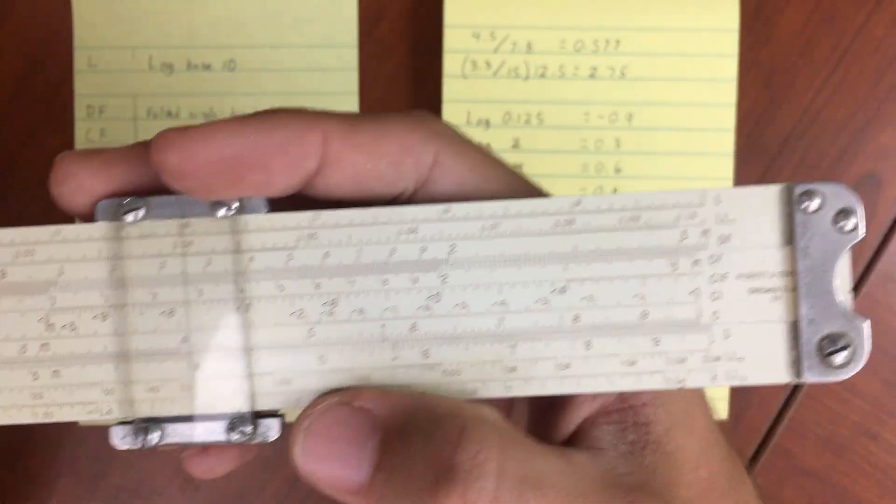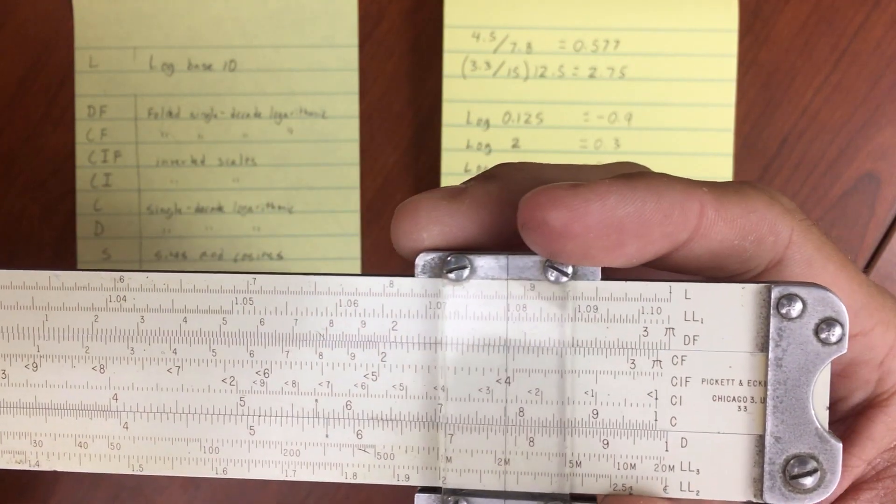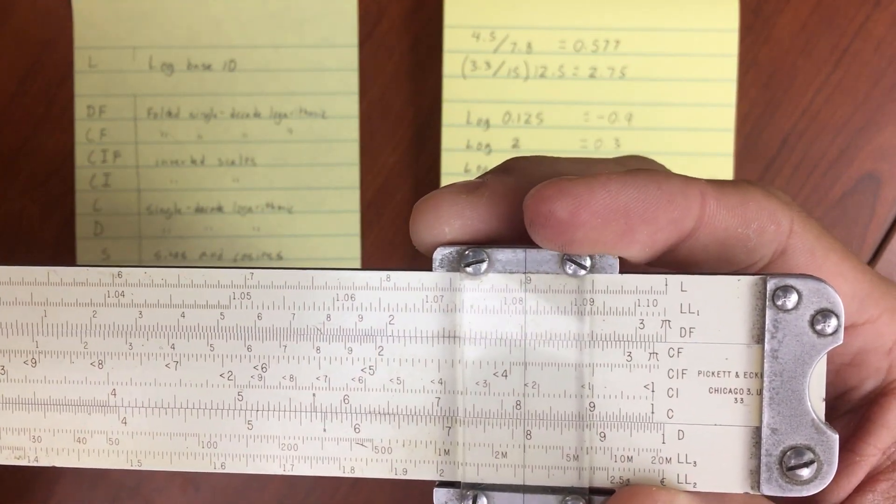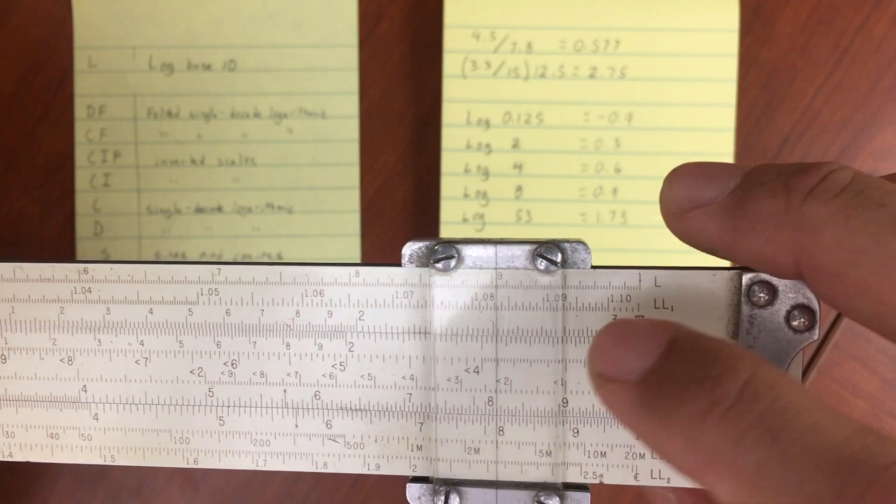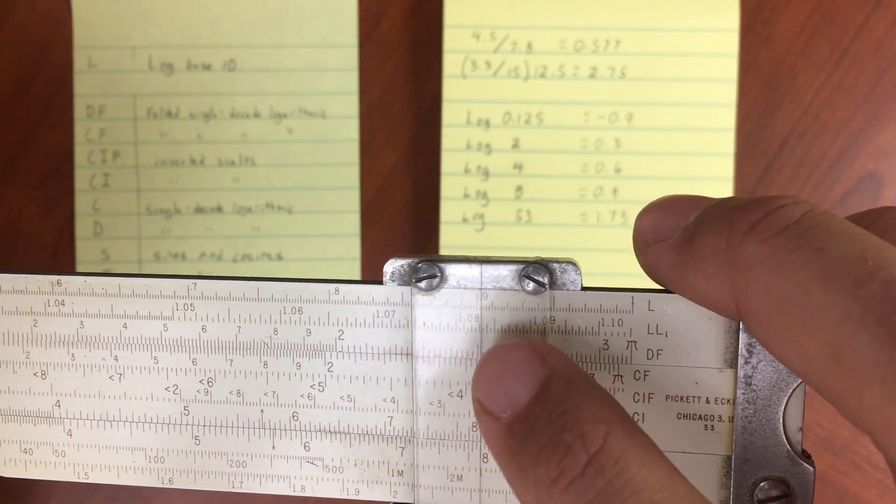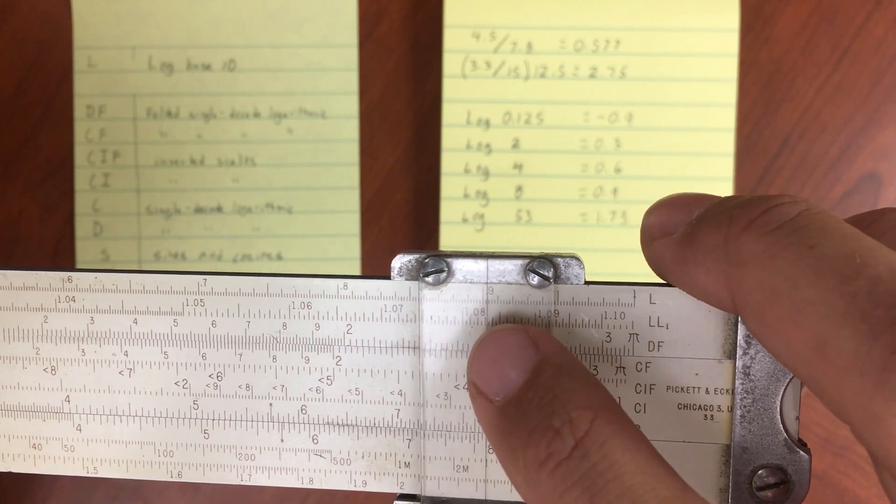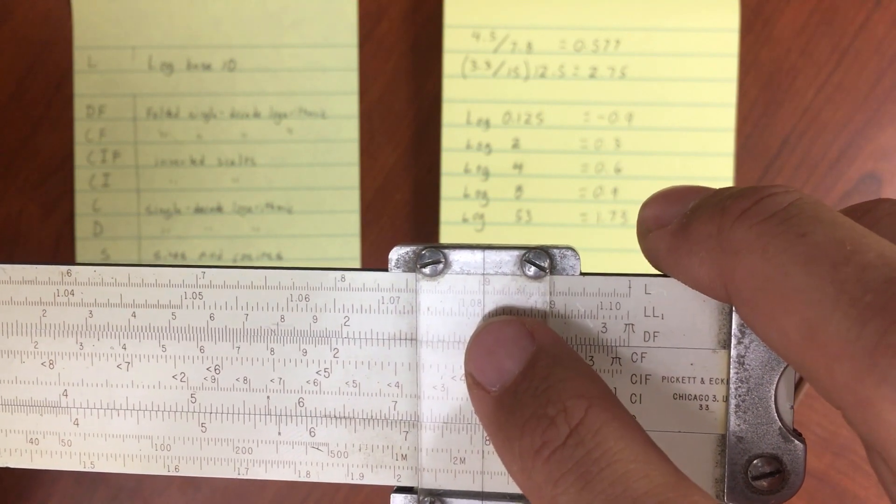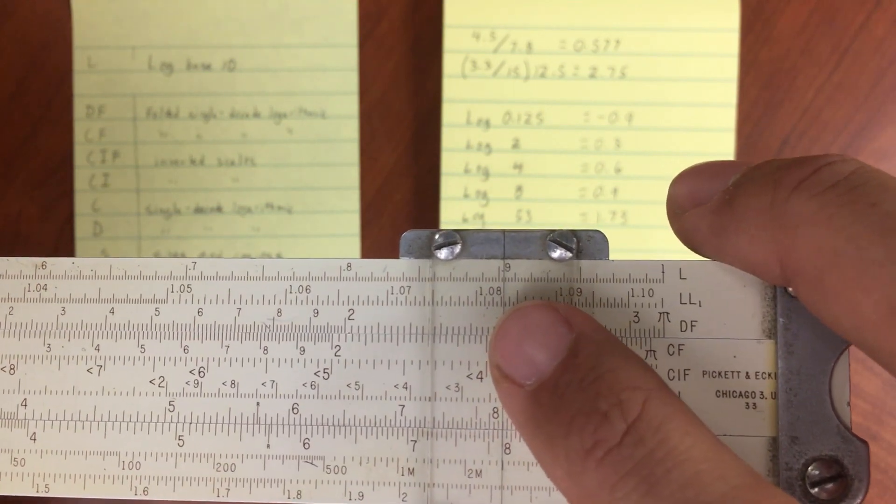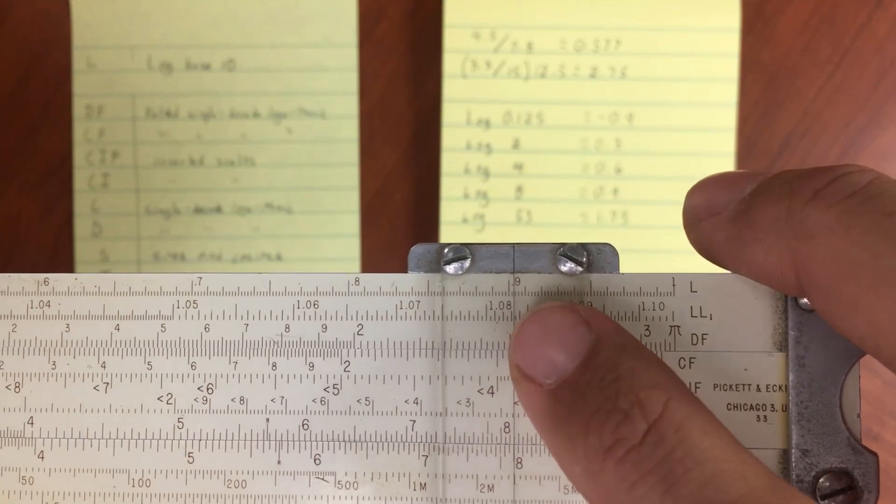And then moving over to eight on my D scale and reading off my value, I'm about point nine zero three is what I would read that as. So about point nine zero three on my log scale.